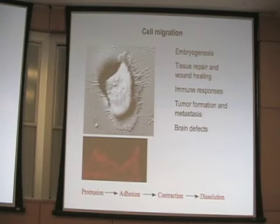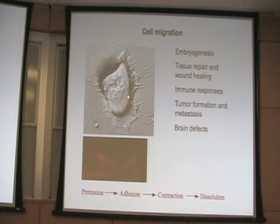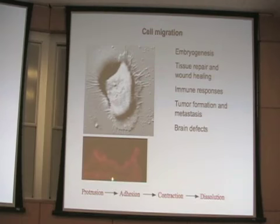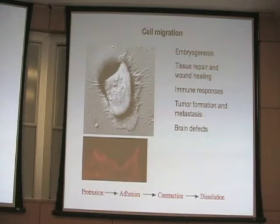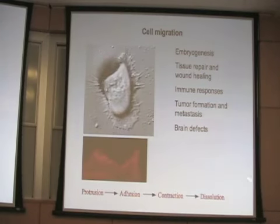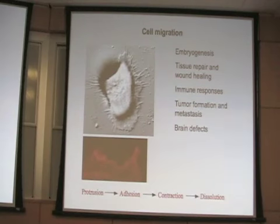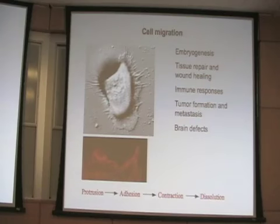Cell migration is a four-step process that includes the protrusion that usually occurs at the leading edge of the migrating cell, then the formation of new adhesions that occur also at the leading edge, then the contraction or movement of the cell body, and finally the dissolution or de-adhesion that occurs at the rear of the cell.